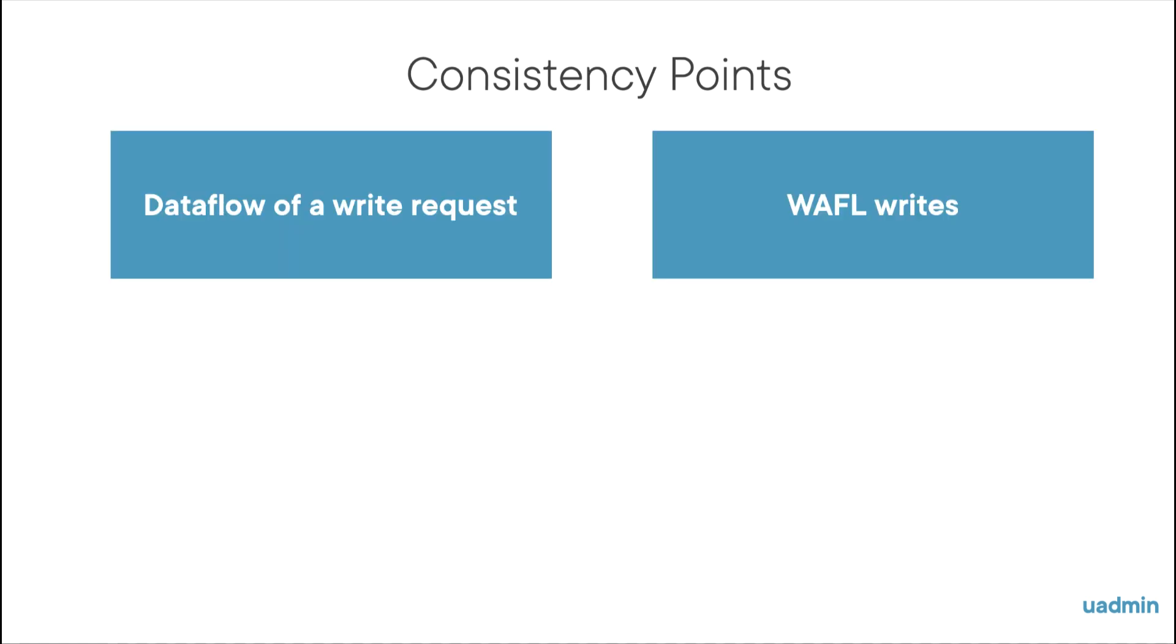To understand what a consistency point is, there are two features that need to be clear. One, how does the flow of a write request go? And two, how does the WAFL file system, which is the file system that ONTAP uses, how does that work?